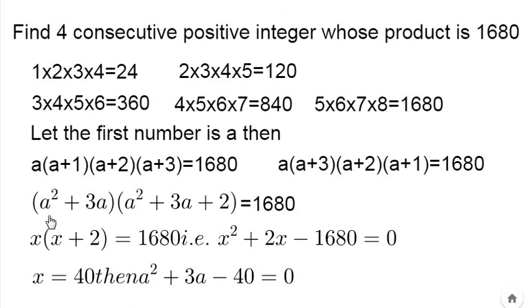Then a²+3a=x, that is a²+3a=40. Then a²+3a-40=0. This is also a quadratic form. By solving this, we get a=5. So the four numbers are 5, 6, 7, 8.